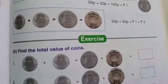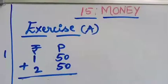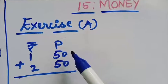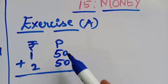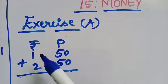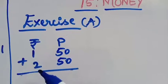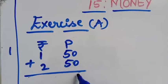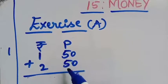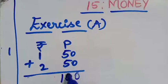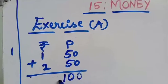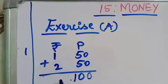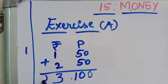Let's do the rough work first. Write two columns — Rupees and Paise. Enter 50 paise and 50 paise in the Paise column, and ₹1 and ₹2 in the Rupees column. Now let's add: 0 + 0 = 0, and 5 + 5 = 10. For rupees: 2 + 1 = 3.